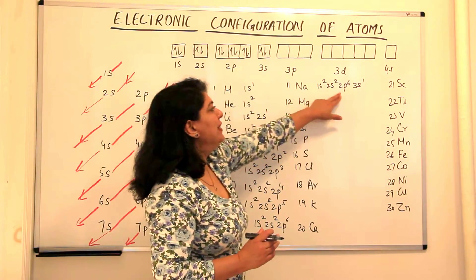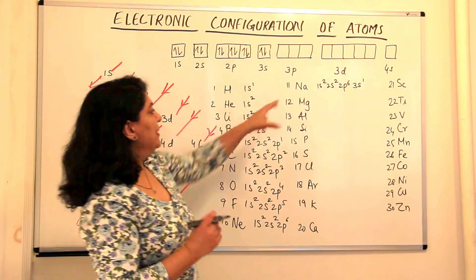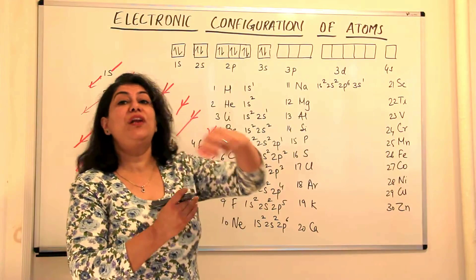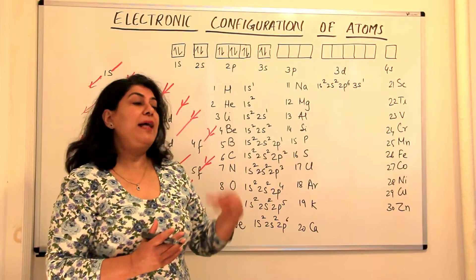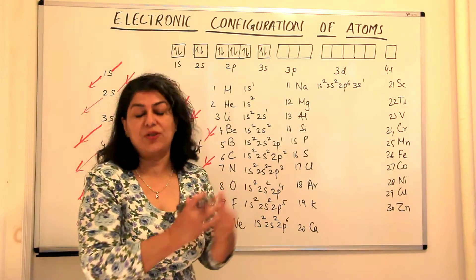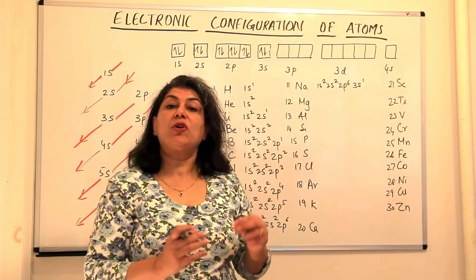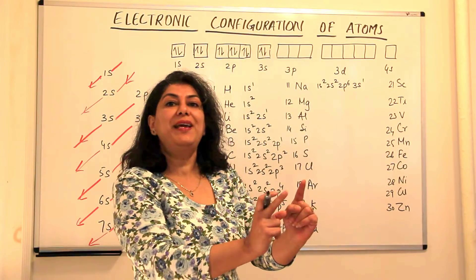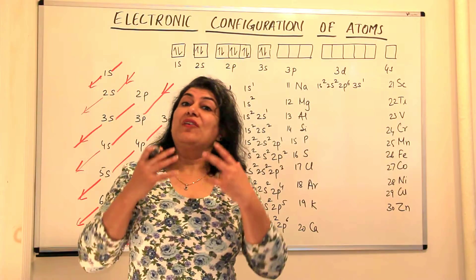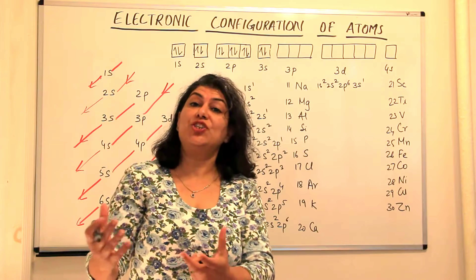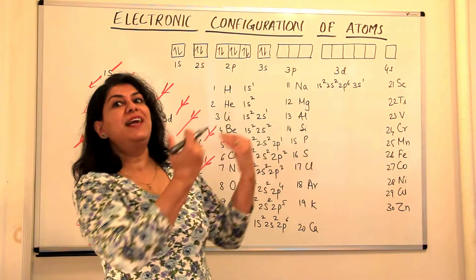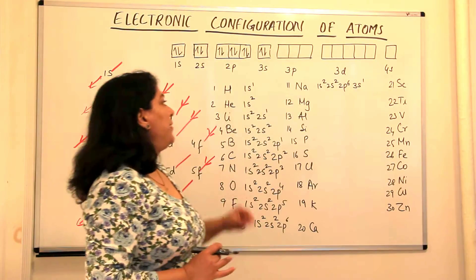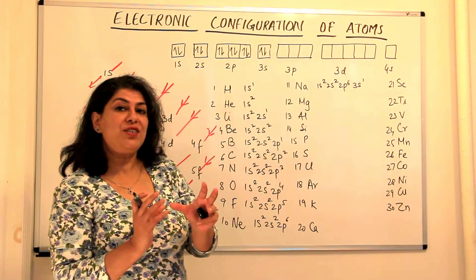The inner shell that is completely filled — in this case the second shell, which is completely filled from sodium onwards — is known as the core of an atom. The core is already filled, and electrons always fill up the outermost shell, the valence shell. These valence electrons are important because they are responsible for the chemical properties of all elements. They participate in chemical bonding, are lost to form positively charged ions, or gained to make a negative ion and make the atom stable.